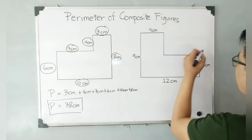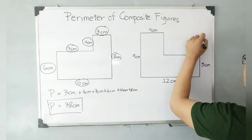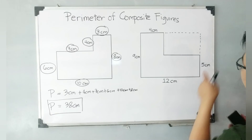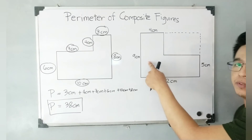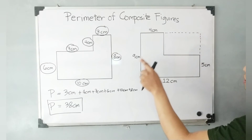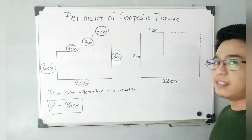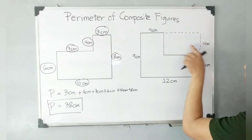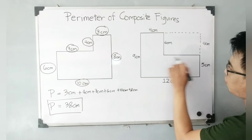For us to calculate the perimeter of this composite figure, this is my way of doing it: I will draw an imaginary line here and here. If we connect this imaginary line to this line which is five centimeters, that is equivalent to the nine centimeters. So we will assume the measurement of this one is equivalent to this side minus this side — that is nine centimeters minus five centimeters — therefore this is four centimeters.